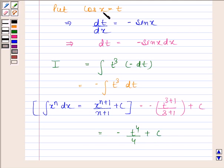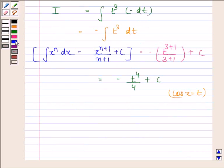We have assumed cos x = t. Now we will put cos x in place of t. So, this is equal to -cos⁴x/4 + c. Hence, our required answer is -1/4 cos⁴x + c.